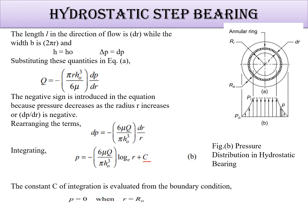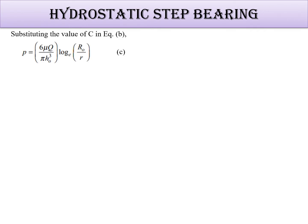So the boundary condition is p is equal to 0 and r is equal to r0. So therefore c is equal to 6μQ/πh0³ log to the base e r0. Put this value of c here and we will get a new equation which is shown here. This is equation number c. This is the equation for pressure.